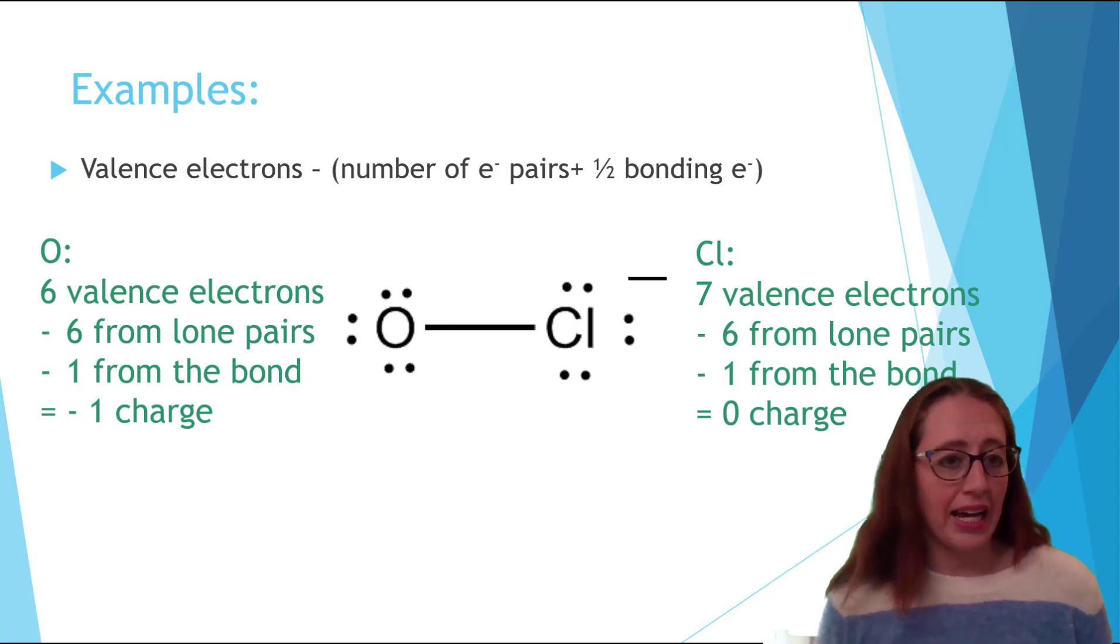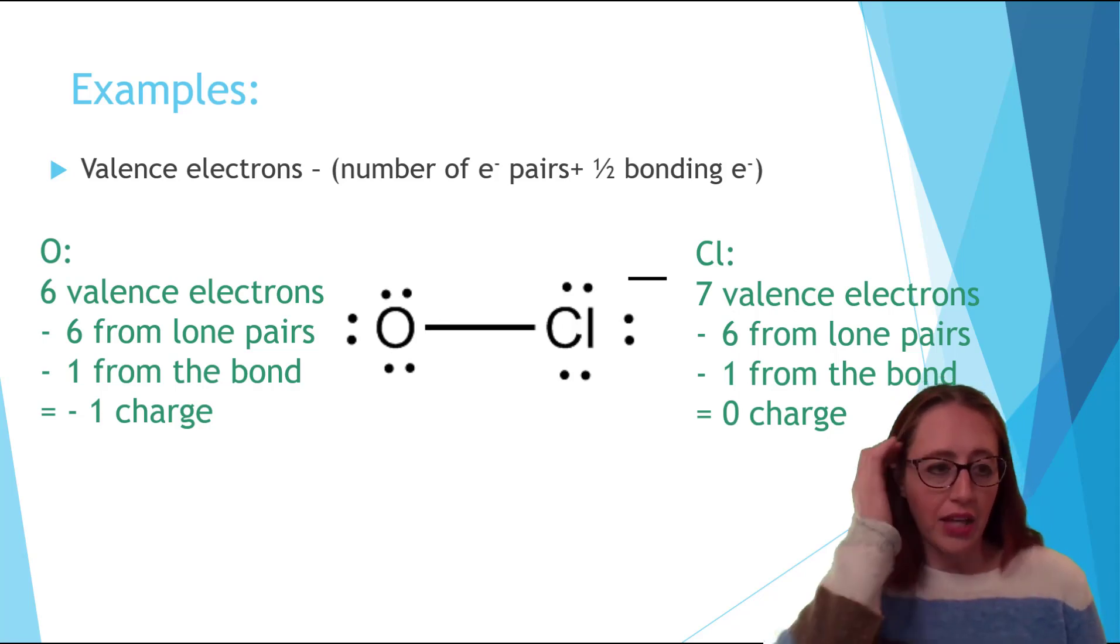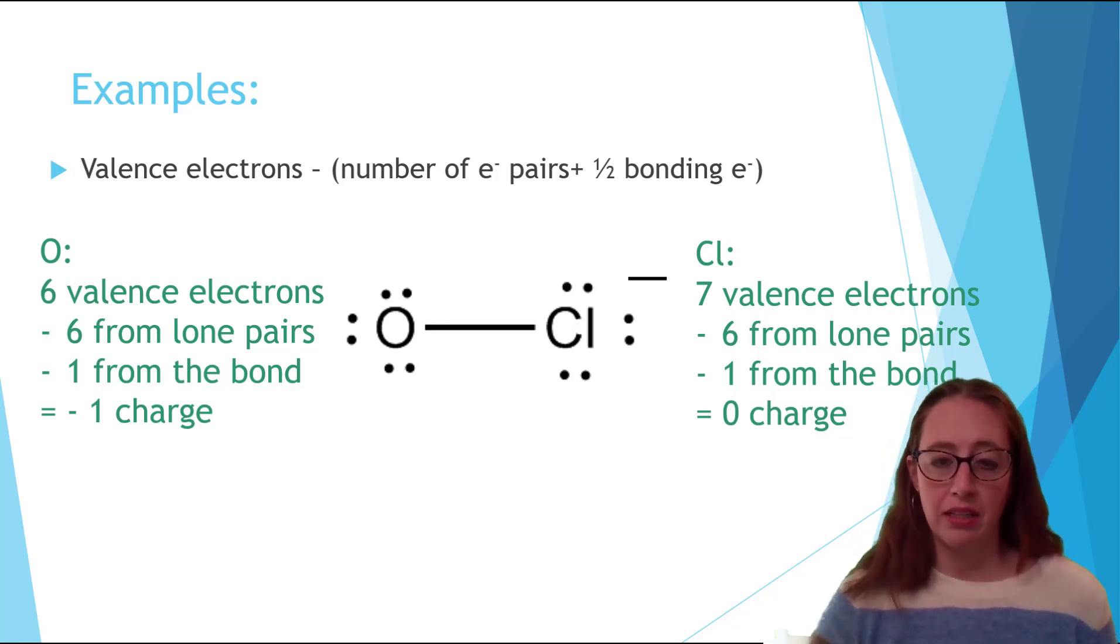Also notice that these add up to be the charge on the species. So the species has a negative one charge and you can see that negative one from the oxygen and zero from the chlorine will add up to be negative one. And this should always be true. If the charge on your species is zero it should add to be zero. If there is a charge on your species because you're talking about a polyatomic ion, then the charges of each individual atom should add to be the charge on the molecule.